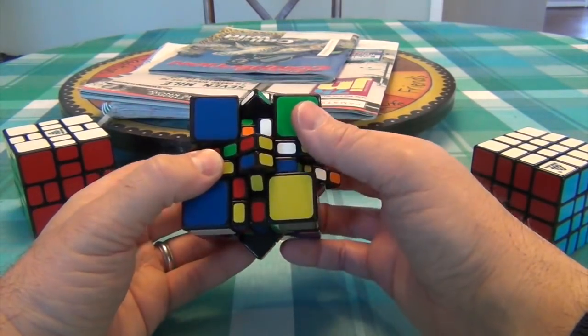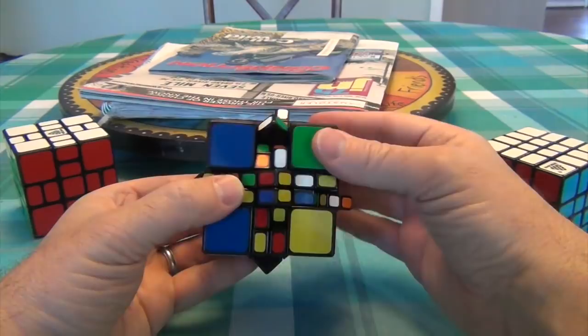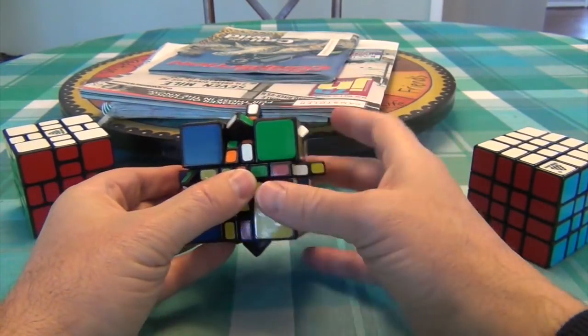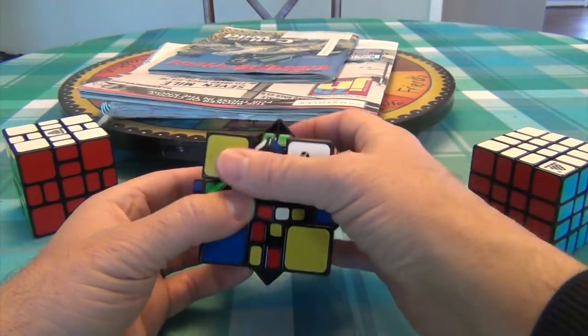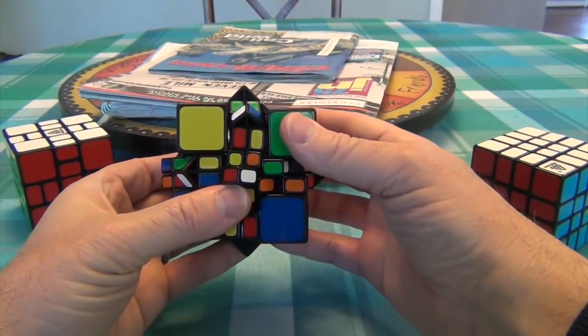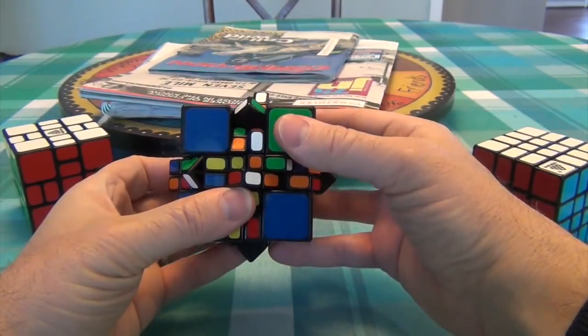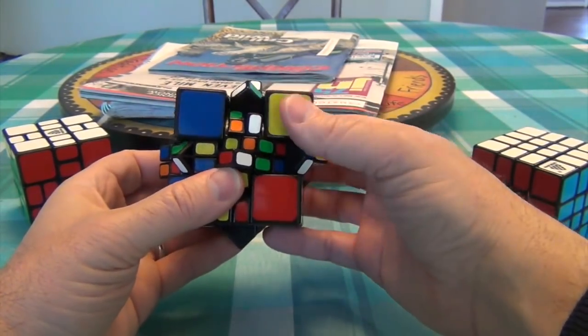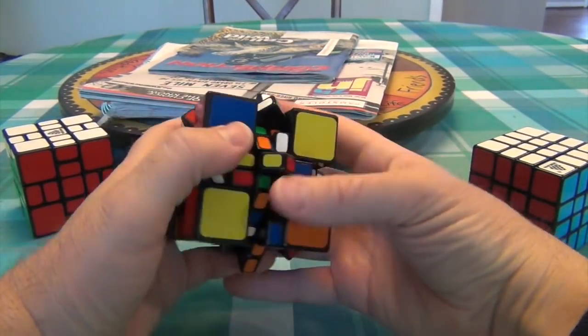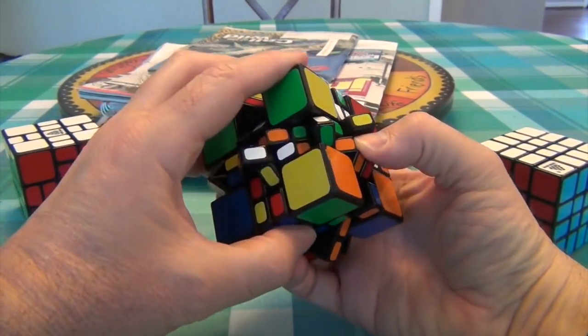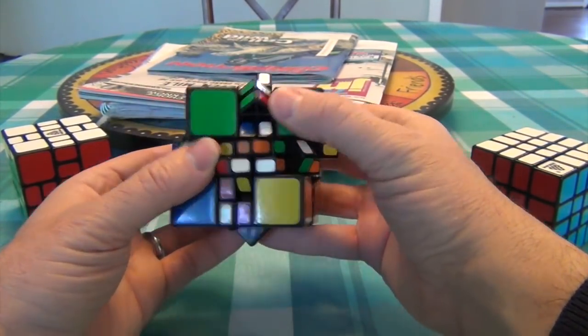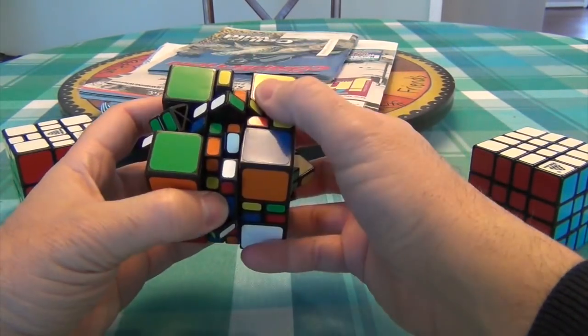So once again, it starts out here, center position, this is an edge position, I move it here, now they're both edge positions. And that algorithm, which you should know if you know how to do a 3x3, U R, U prime, R prime, U prime, F prime, U F. It did swap it to here, but you've got to remember to turn it back.